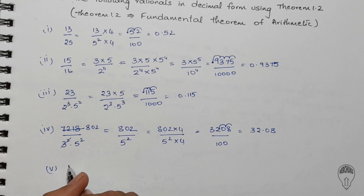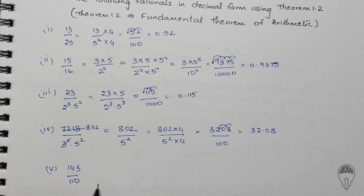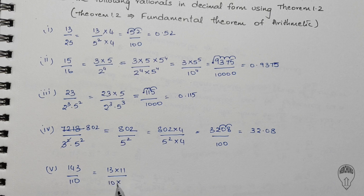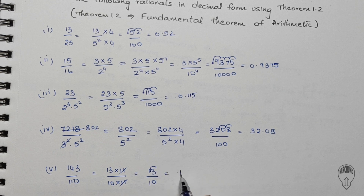For the fifth problem we have 143 divided by 110. 143 can be written as 13 times 11, and 110 as 10 times 11. We cancel the 11s, giving us 13 divided by 10. Since we have 10 in the denominator, we move the decimal one place to the left. The final answer is 1.3. Take a screenshot of the solution and please subscribe to our channel for more solutions.